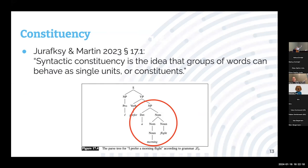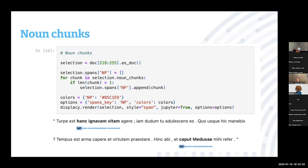One thing we might want to think about is the idea of constituency — that when we deal with language, we can talk about words, but we might also want to talk about groups of words that behave as single units. For example, 'a morning flight' — it's not just a flight, it's a morning flight, and English has a determiner system. We can do this computationally as well. Using a trained Latin model, with a fairly minimal amount of code, the computer can predict what a noun phrase in Latin is — such as 'the head of Medusa.'